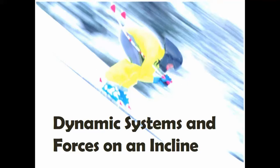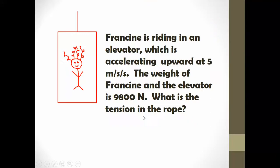This lesson is going to talk about dynamic systems and forces on an incline. Francine is riding in an elevator which is accelerating upward at 5 meters per second per second. The weight of Francine and the elevator is 9,800 newtons. What is the tension in the rope?